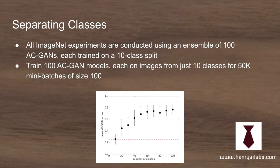They take the ImageNet dataset with 1,000 classes and split it into 100 different ACGANs, each with 10 classes that they're classifying the labels on. They experiment with having more classes in each ACGAN, but find that 10 works best. As they try to increase the number of classes in each model, they experience mode collapse in the generator.